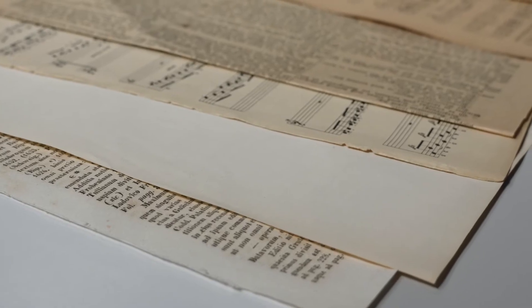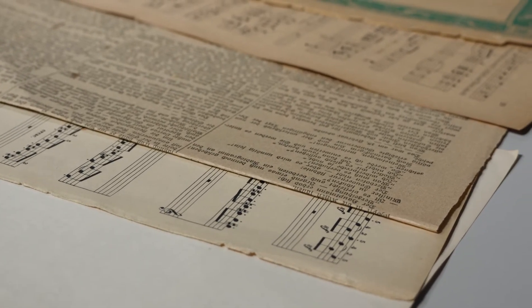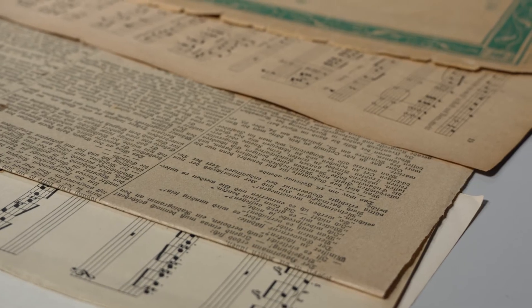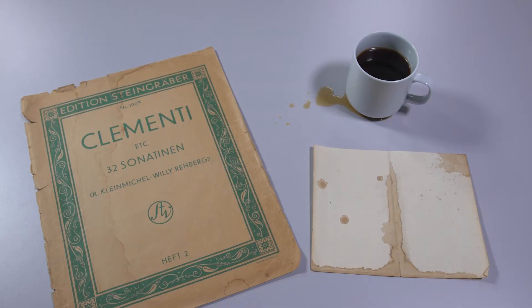This becomes visible, for example, through yellowing and loss of strength of the paper, whereby acidic compounds degrade and destabilize the paper. Color impurities may also develop as a result of improper handling and storage.